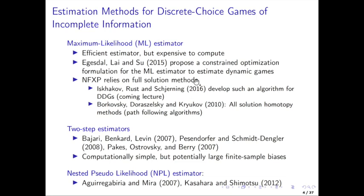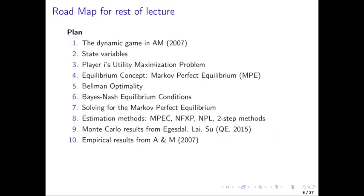So this is kind of a very broad overview of the literature of dynamic games — an incomplete overview. So let's go to the road plan for the rest of this lecture. First, I'm going to introduce the notation for the dynamic game in Aguirregabiria and Mira 2007, talk about the state variables, the player's utility maximization problem, and introduce the equilibrium concept which is going to be Markov perfect equilibrium.